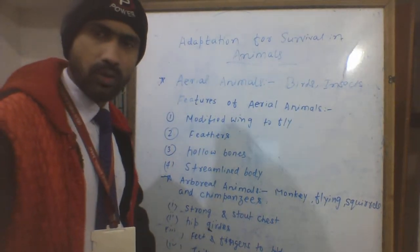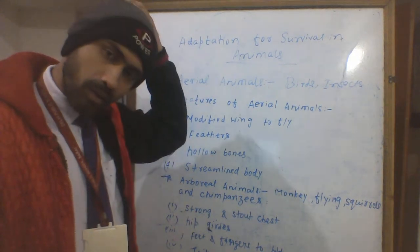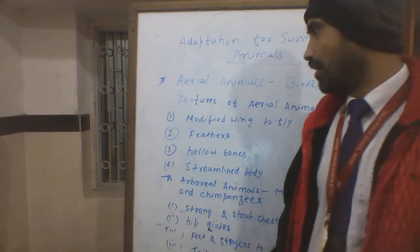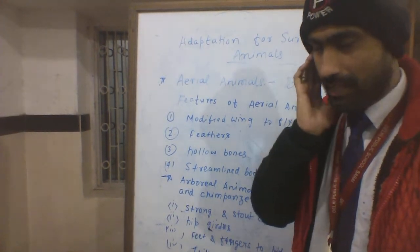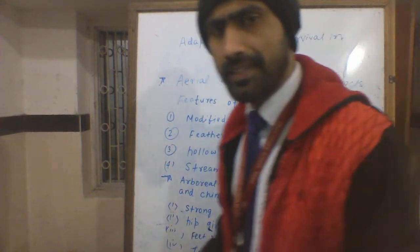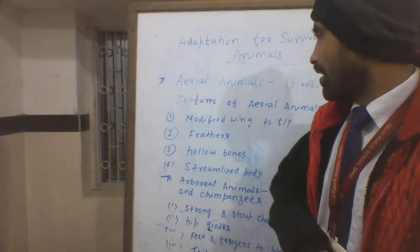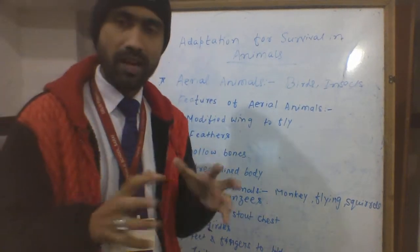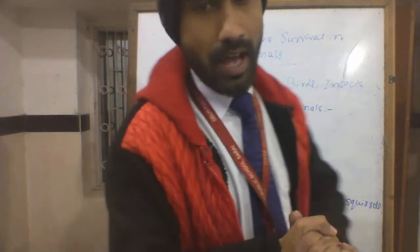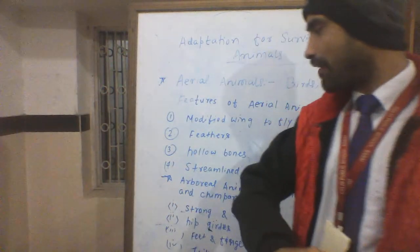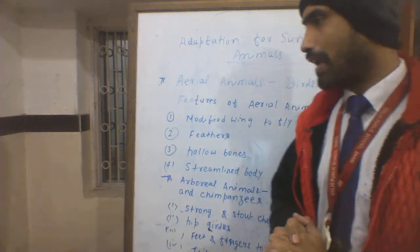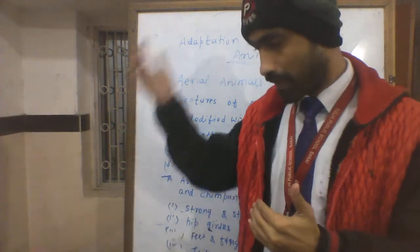Aerial animals are known as animals that live and fly in the air. Examples include birds and bats — these are all aerial animals. Their adaptive features include modified wings — they have big wings which help them fly. They also have a lot of feathers which help them fly.